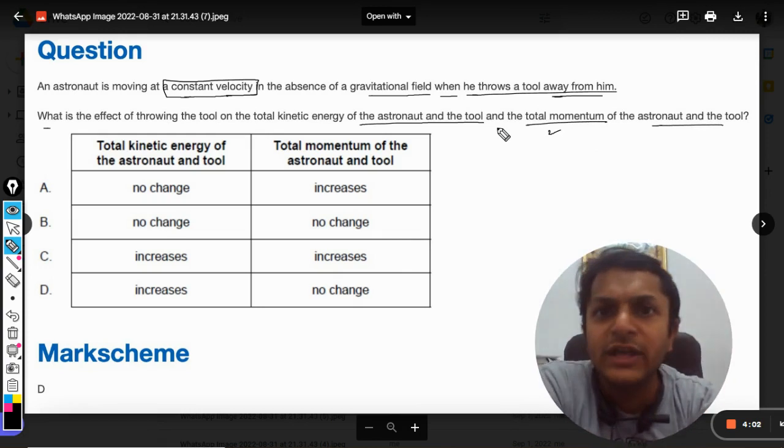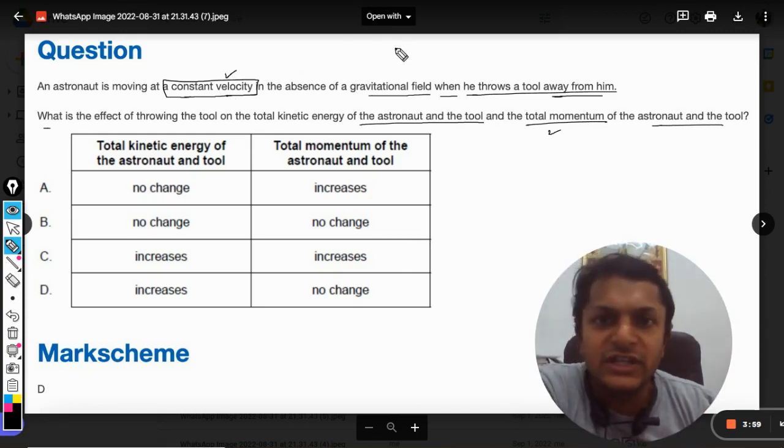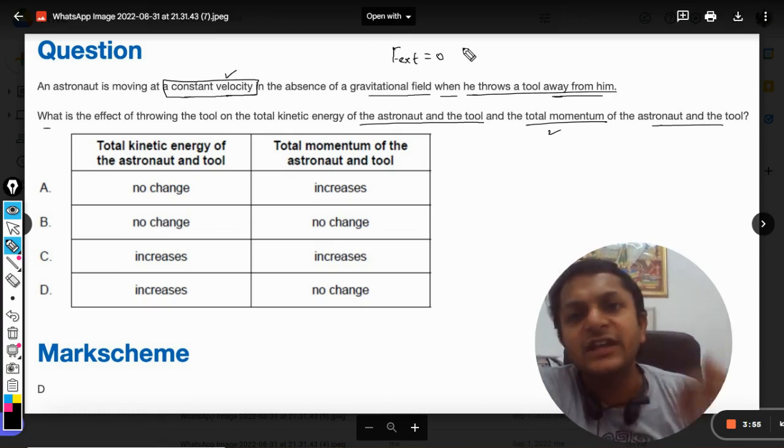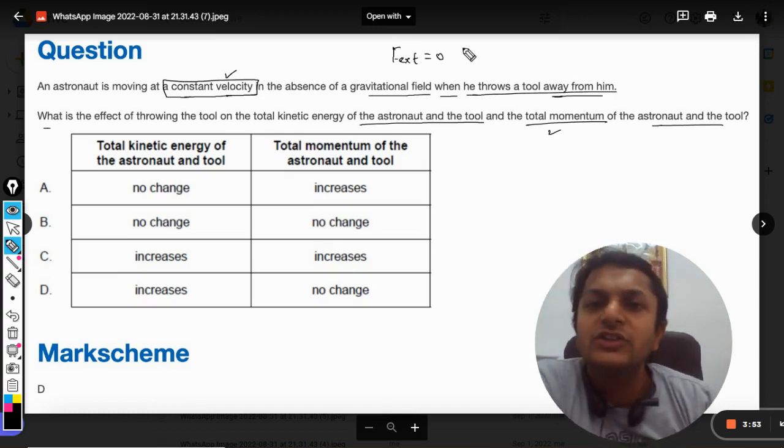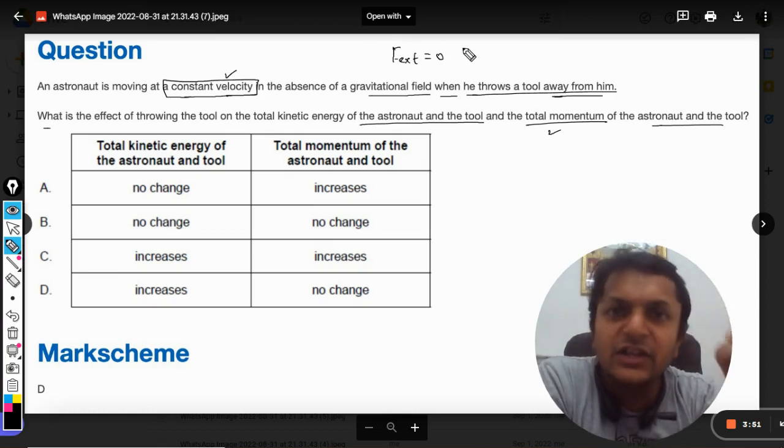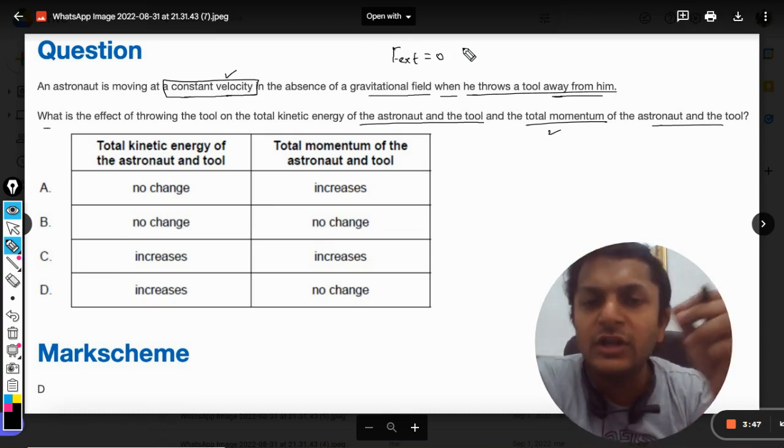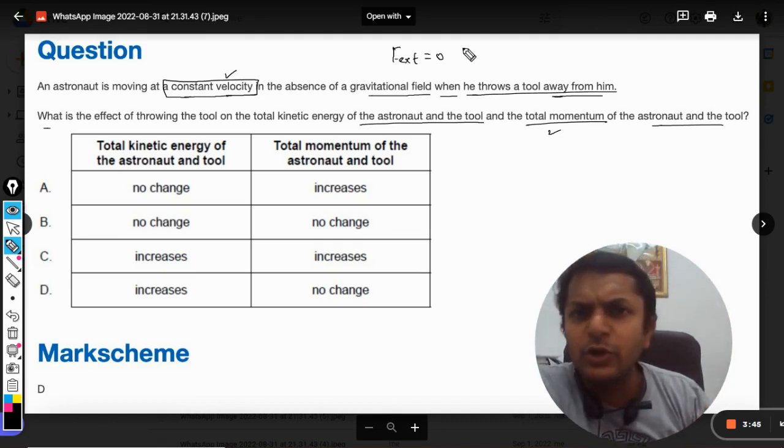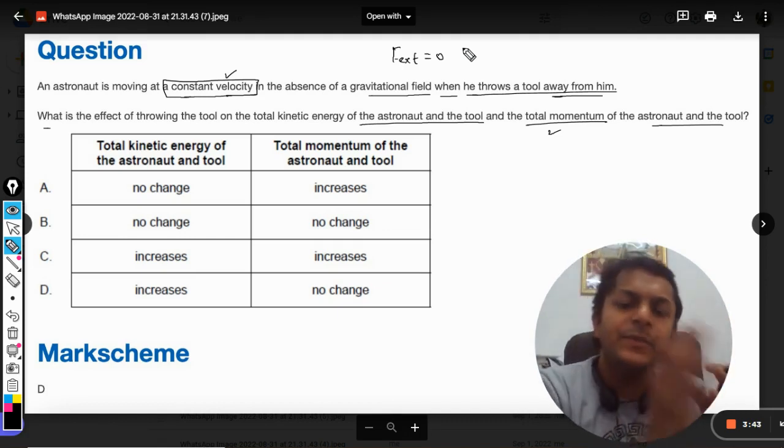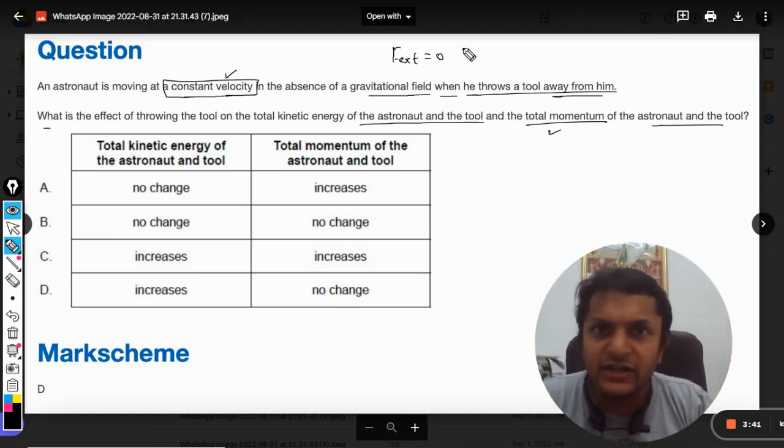because we know that the astronaut is moving at a constant velocity, the only condition is that the external force should be equal to zero. So external force is equal to zero. So the total momentum before the collision, the explosion or whatever you call it, before the event will be equal to the total momentum of the system after the event. So as per the momentum is concerned, it will be no change.